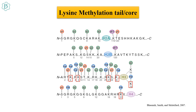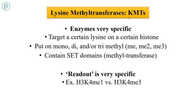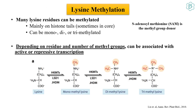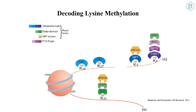Now we see lysine methylation of the histone tail or core. Lysine methyltransferases (KMTs) are very specific — they target a certain lysine on a certain histone and can put mono, di, or trimethyl groups. They contain SET domains and the readout is very specific, meaning H3 K4 monomethylation versus trimethylation are generated by very specific enzymes. S-adenosyl methionine (SAM) is the methyl group donor. Readers contain chromodomain, Tudor domain, MBT domain, and PHD fingers that recognize methylated lysine residues.